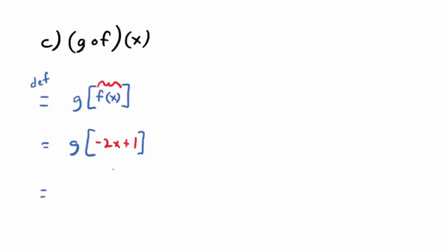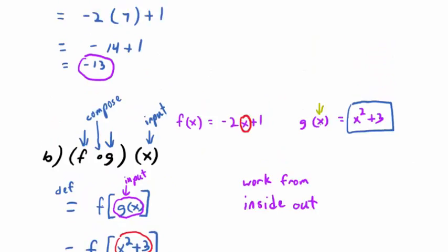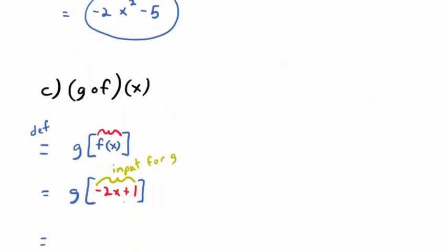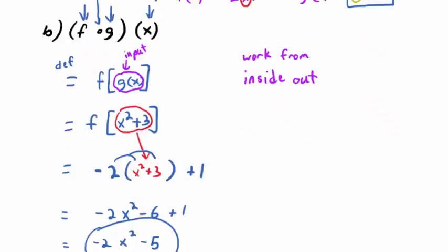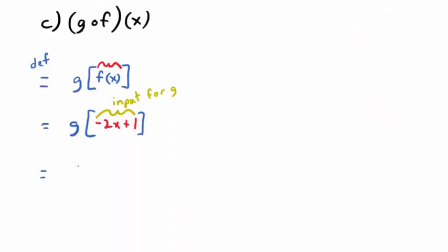g of negative 2x plus 1 — that's just regular function notation. The input is now negative 2x plus 1 — that's your input into g. So you go back up to the formula for g. The input was x, but you're going to switch that to negative 2x plus 1. So write parentheses squared plus 3 to get used to the idea of substituting something in for x: parentheses squared plus 3, and in that set of parentheses insert the new input, negative 2x plus 1.